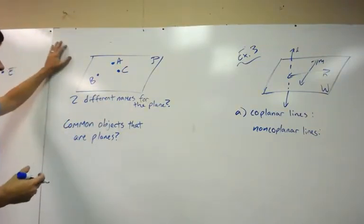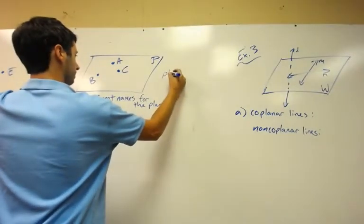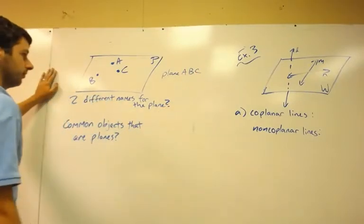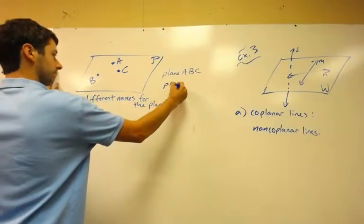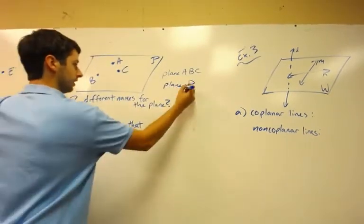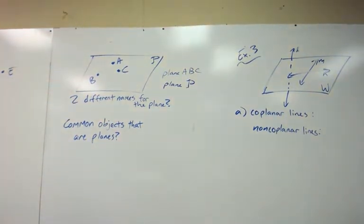And in order to name the plane is you could say plane ABC, like so. Or you could say plane, notice the capital letter here, and they kind of give it a little cursive look there, but you could also call it plane P. Either of those would work.